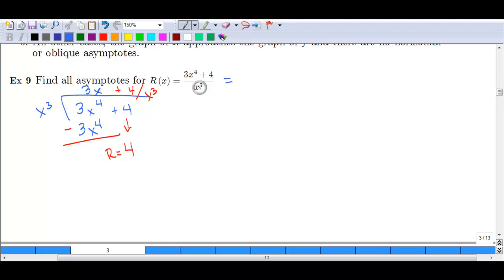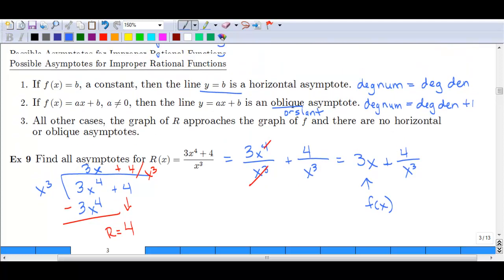Another way we can look at this, since we only have one term and this only works when you have a single term in the denominator, we can just split this up into 3x to the fourth over x cubed plus 4 over x cubed. So the 3x to the fourth is going to reduce down to 3x, and the 4 over x cubed is still our remainder. So this here, the 3x, is our F(x). So take a second, go back up to the rules. Which case does this follow? It follows rule number 2, Ax plus b. In this case we don't have a b, but we have the Ax, that's the important part.